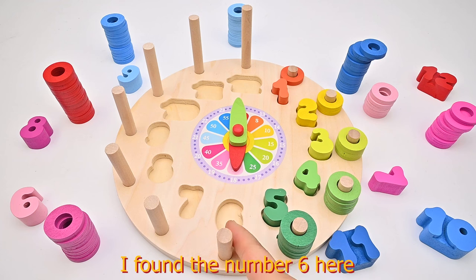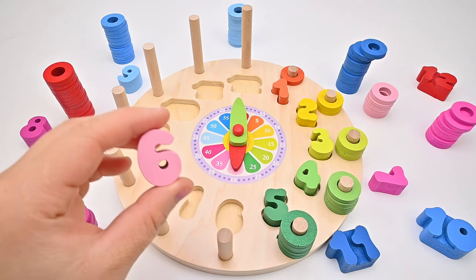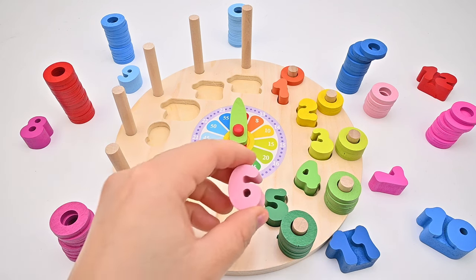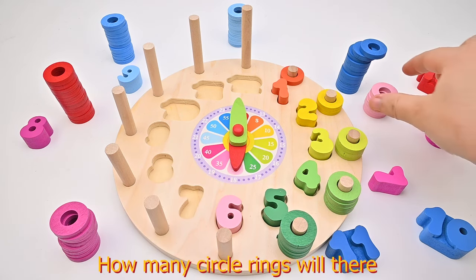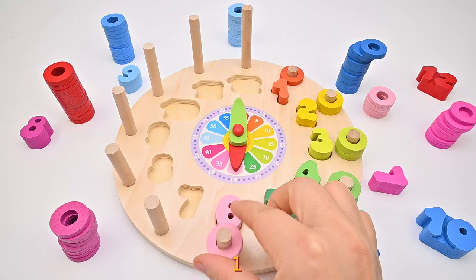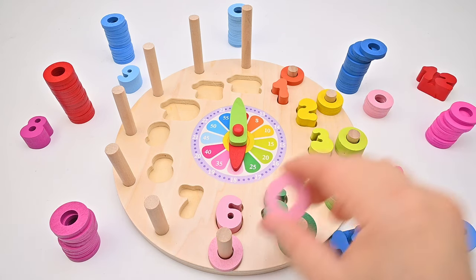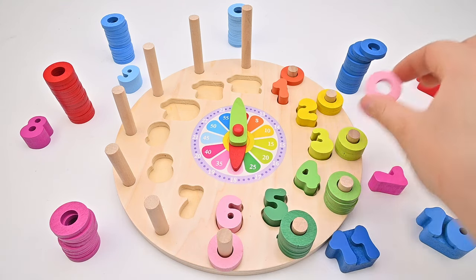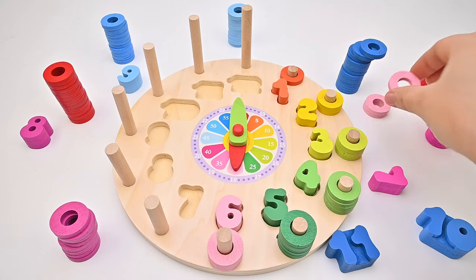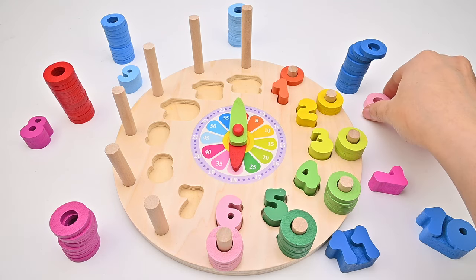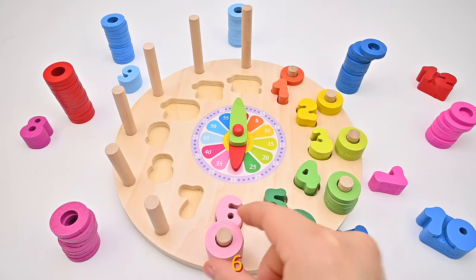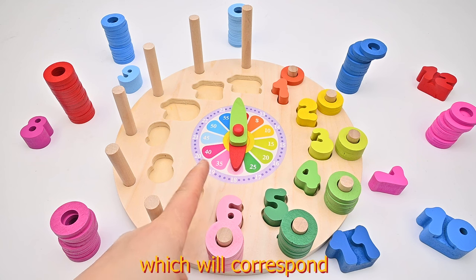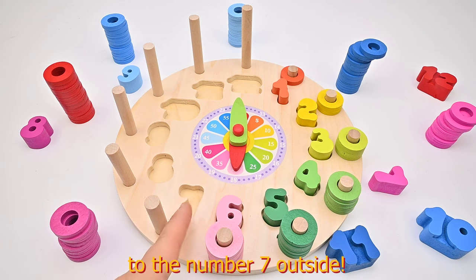I found the number 6 here. How many circle rings will there be in this column? 1, 2, 3, 4, 5, 6. Here there is the number 35 which will correspond to the number 7 outside.